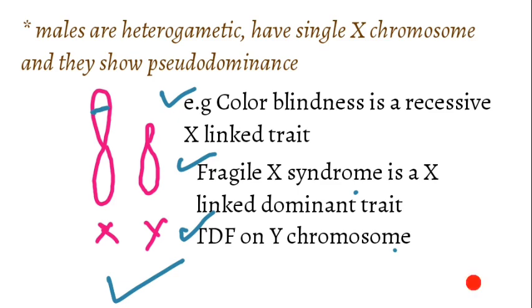Males are heterogametic and have only one X chromosome, so they show a phenomenon known as pseudo-dominance. 'Pseudo' means false. Whatever allele is present on the male's single X chromosome will be expressed — whether recessive or dominant. A recessive allele will express its recessive trait because there is no second X chromosome to mask it. This process is known as pseudo-dominance in heterogametic organisms.